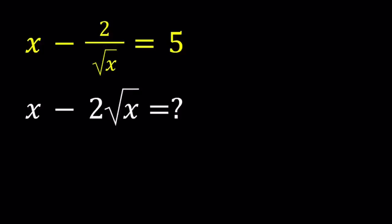Hello everyone. In this video we're going to be dealing with a radical equation. We have x minus 2 over the square root of x equals 5 and we're supposed to find the value of x minus 2 times the square root of x. I'll be presenting three methods even though you can use a third method which I'll briefly talk about.